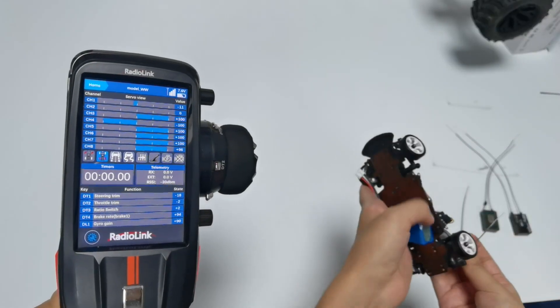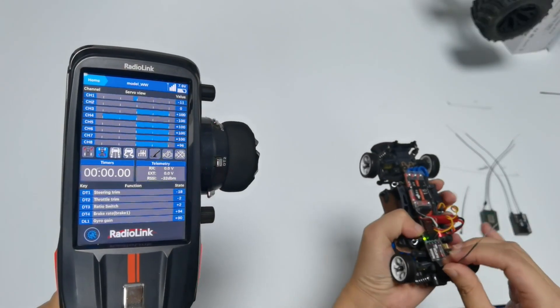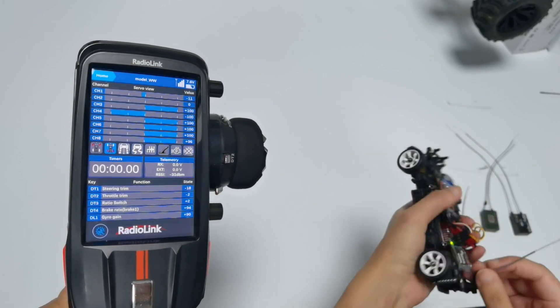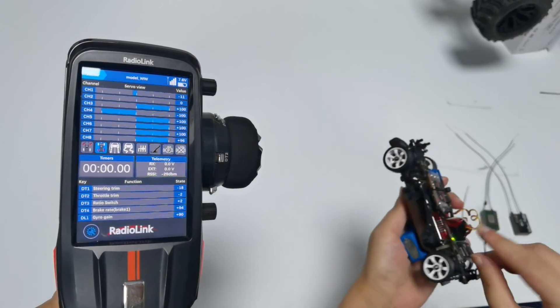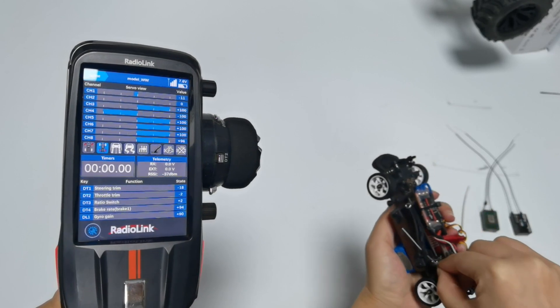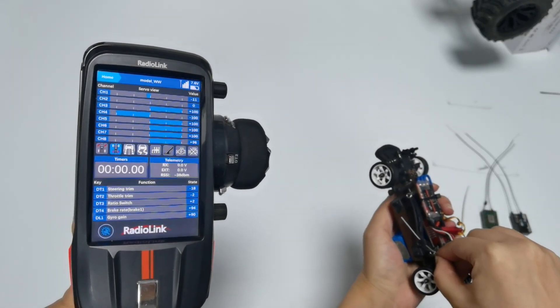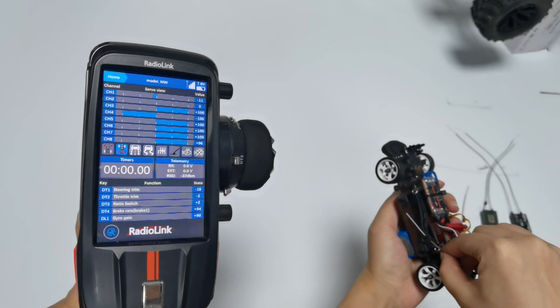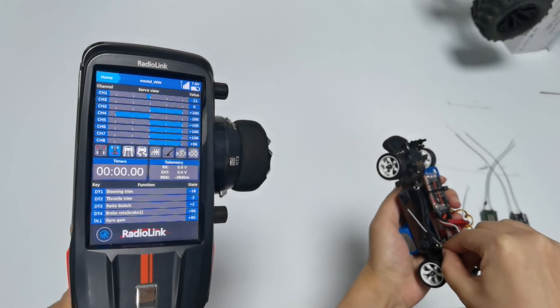For example, there are metal parts on this car. If I keep the antenna of R4FG close to the metal parts, we can see the RSSI value is about minus 40 dBm.